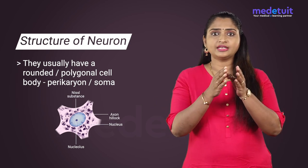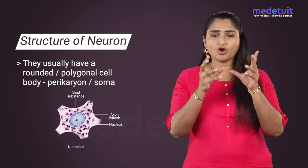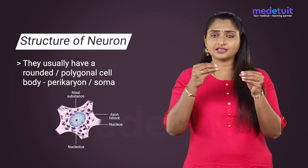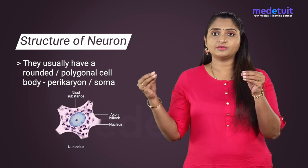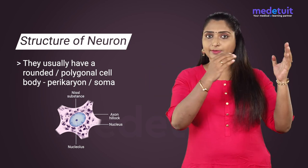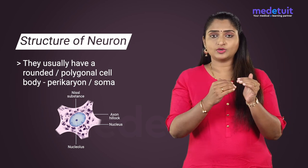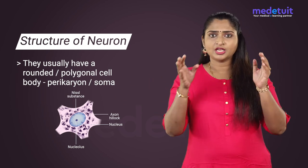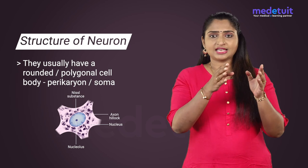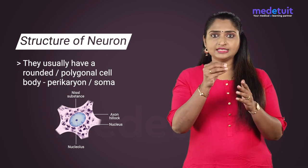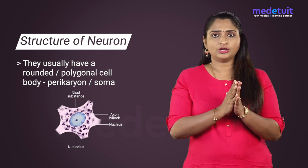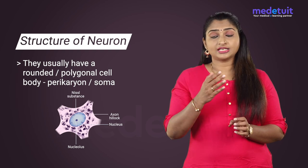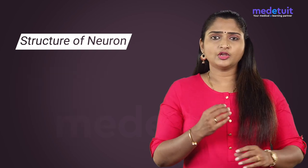We have the cell body, we have the small dendrites around the cell body, and then there is a long axon going away from the cell body. Dendrites conduct impulses towards the cell body and axons away from it. The neurons have cytoplasm that contains the nucleus and the nucleolus. The cytoplasm is rich in RNA, which are called Nissl granules.